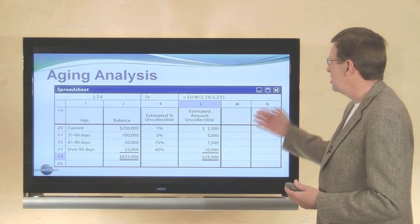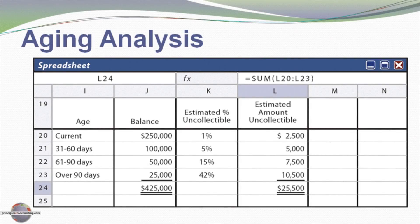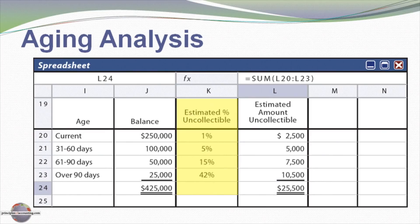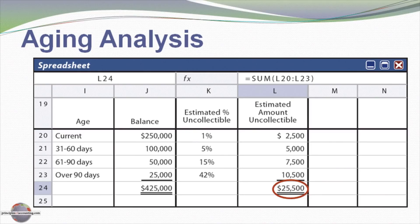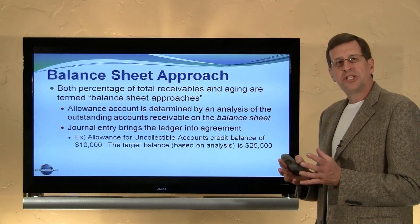So let's look closer at these balance sheet approaches. Here is an aging that we've done in a spreadsheet. We have total accounts receivable of $425,000. $250,000 of that is current, $100,000 is 31 to 60 days old, and so forth. We know from past experience that 1% of our current receivables prove to be uncollectible, the other 99% we anticipate collecting, 5% for the next strata, and so forth. Multiplying the percentages times the balances in each strata gives us an estimate of the amount of uncollectibility attributable to each strata, which we total up and find that we expect $25,500 to be the estimate of the amount uncollectible out of our total $425,000.